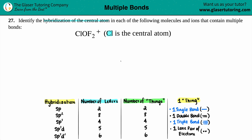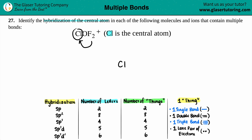They say that chlorine is in the middle. All the other elements have to be around the chlorine — I've got one oxygen and two fluorines surrounding it. Maybe I'll put the oxygen up top and the fluorines down below. It does not matter where you put them, just as long as they're surrounding the chlorine.